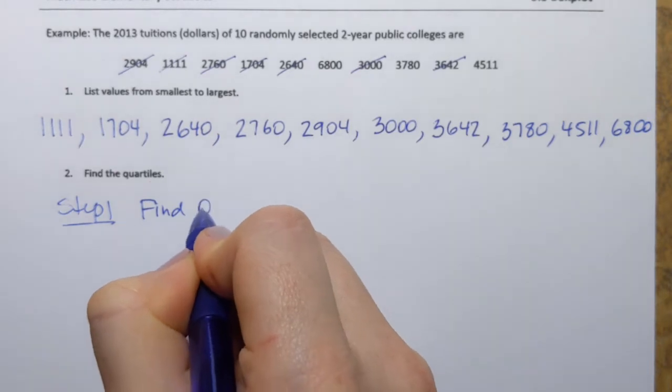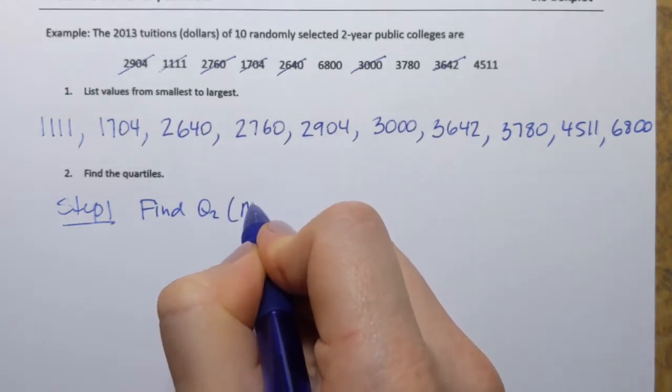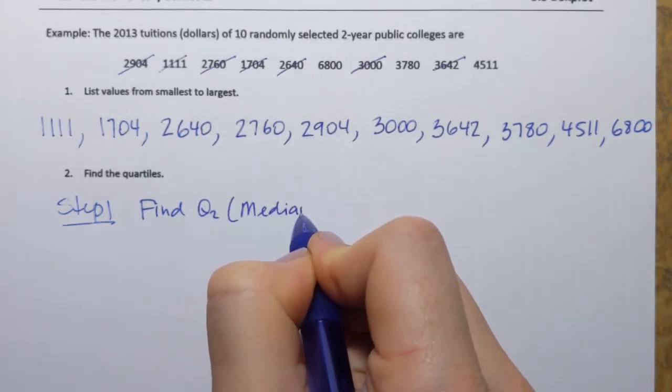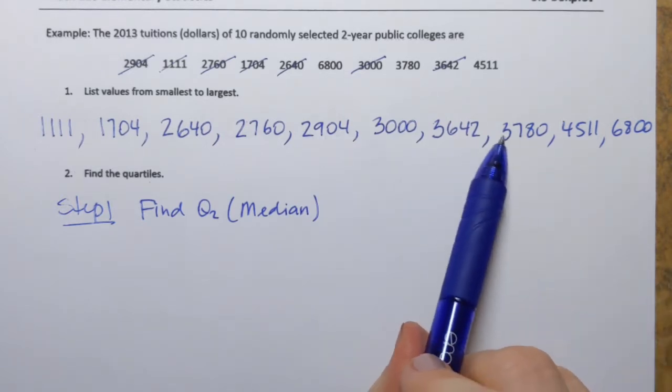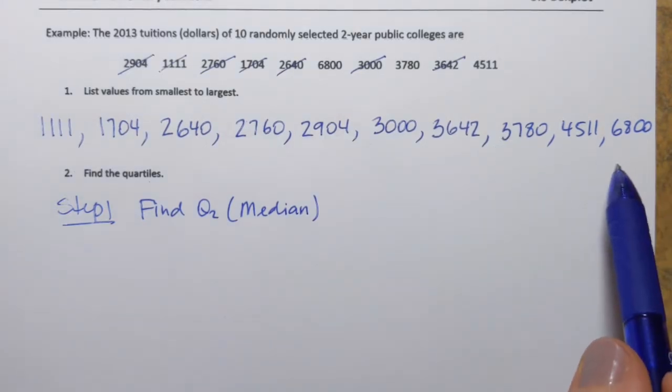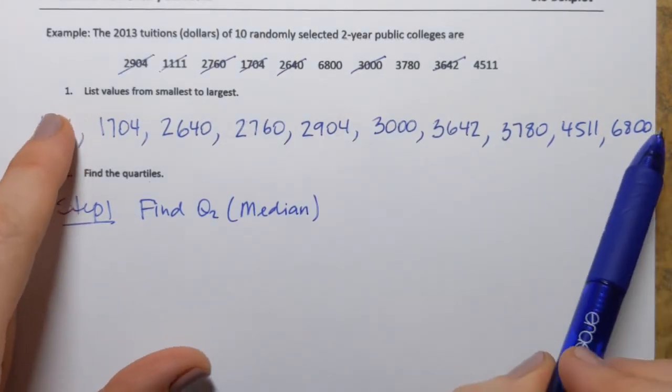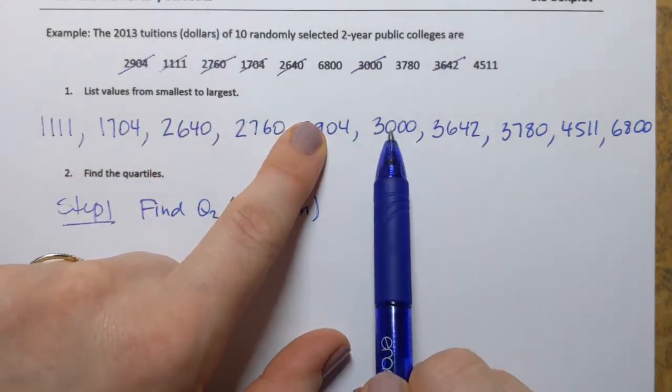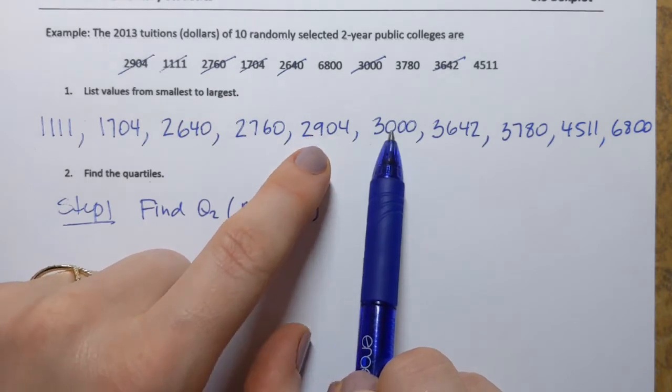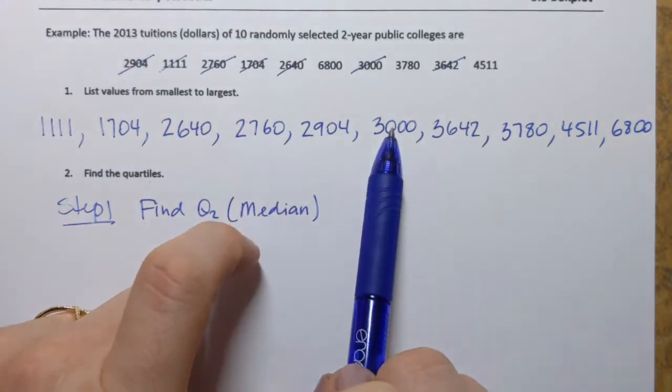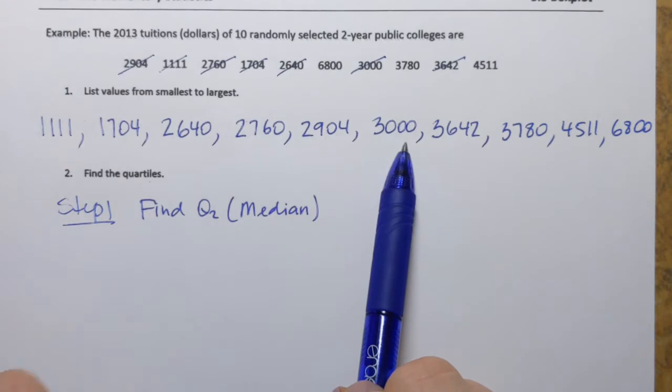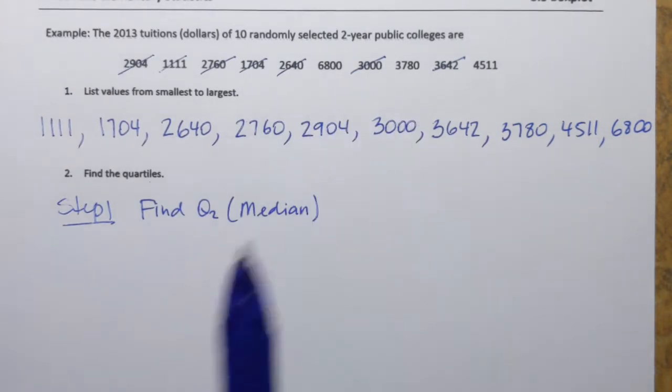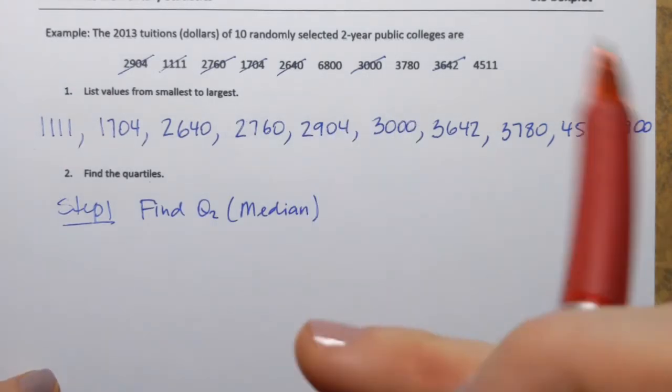Find Q2 because it's the same as the median. And we know how to find median, right? So we have to find either the middle value or the middle two values of our data set. If I check what happens here in the middle, since I have 10 values, I don't have the middle one, I have the middle two.